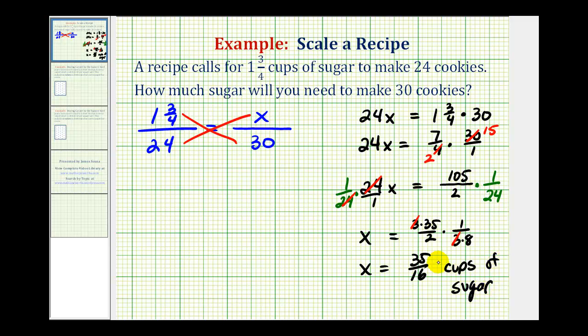Let's go ahead and convert this improper fraction to a mixed number. So we'll have thirty-five divided by sixteen. There's two sixteens in thirty-five. Two times sixteen is thirty-two. We have a remainder of three. So this tells us that we need two and three sixteenths cups of sugar to make thirty cookies.